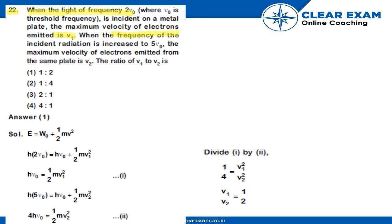When the frequency of the incident radiation is increased to 5V0, the maximum velocity of electrons emitted from the same plate is V2. The ratio of V1 to V2 is: